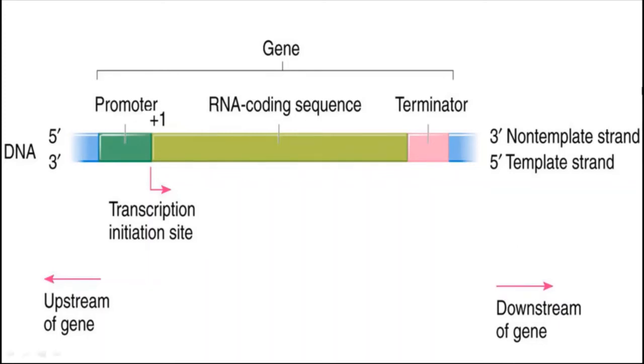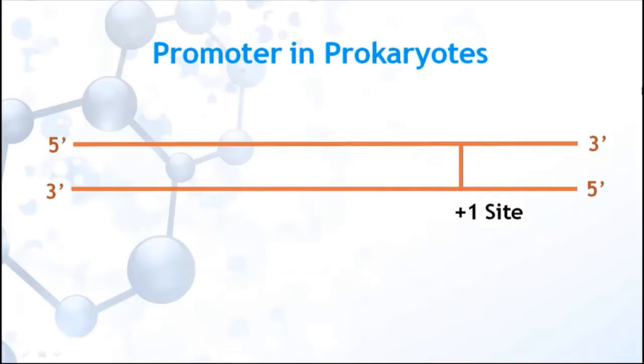Promoters are certain specific areas on the DNA that act as starting signals for initiation process. In human beings, about 10 to 15 transcription initiation sites are present on the entire DNA. Promoter is the site for attachment of RNA polymerase enzyme.